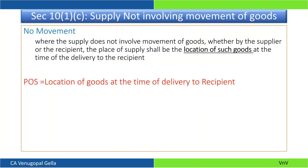Whenever there is no movement of goods, the place of supply is wherever the location of the goods at the time of delivery to the recipient. Imagine a case where goods were taken on hire purchase — at the time of the original movement there was no supply; the goods were on rent. But when you choose to keep the goods, at that time the supply happens but there is no movement. So the place of supply would be wherever the goods are located at the time of delivery to the recipient.